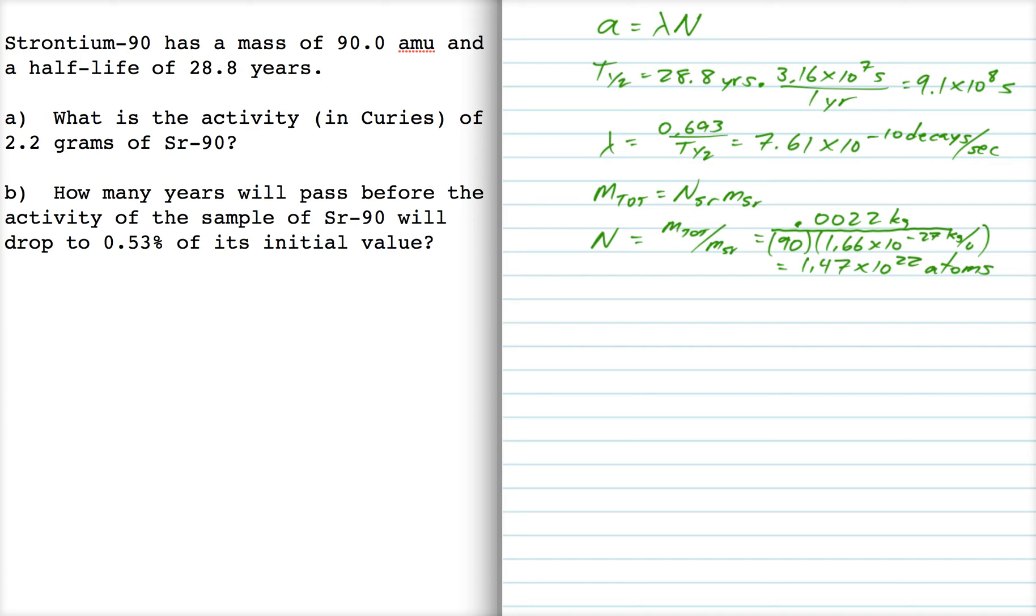Now I can calculate activity from lambda N, and I get 1.12 times 10 to the 13th becquerels. But of course it asks for the activity in curies, so I multiply by 1 curie over 3.7 times 10 to the 10 becquerels, and that gives me 303 curies.